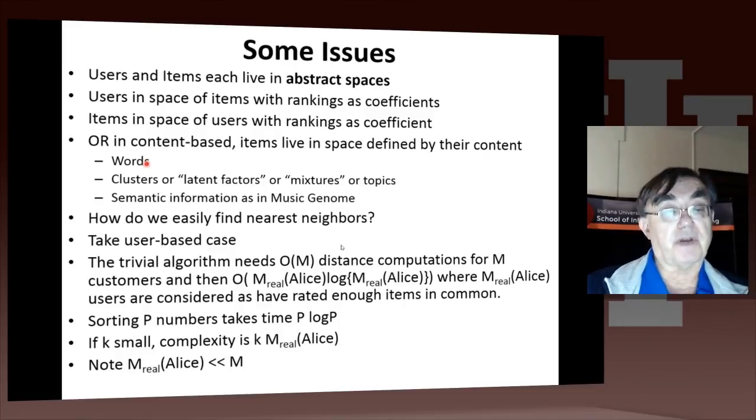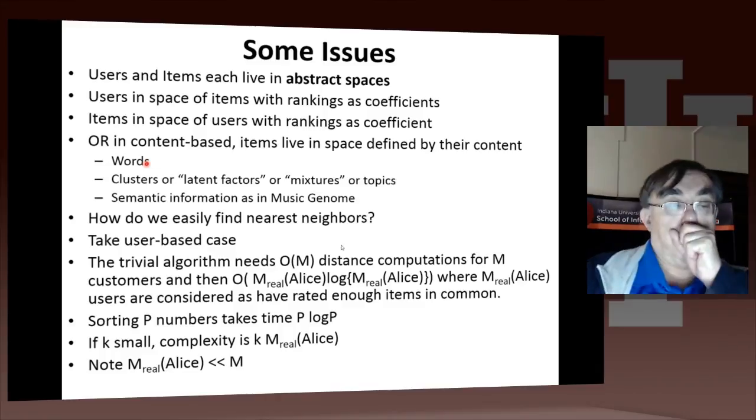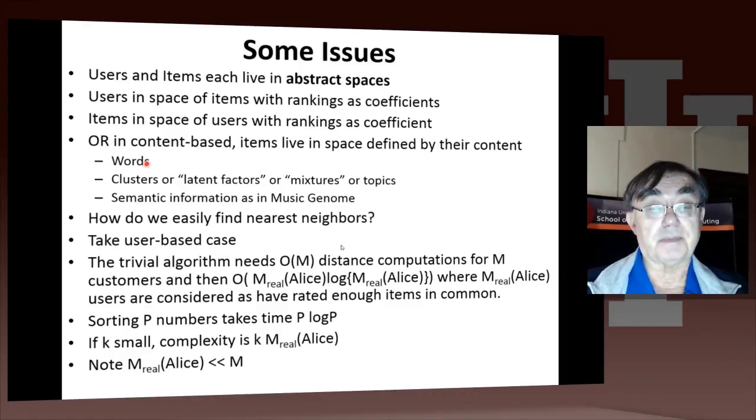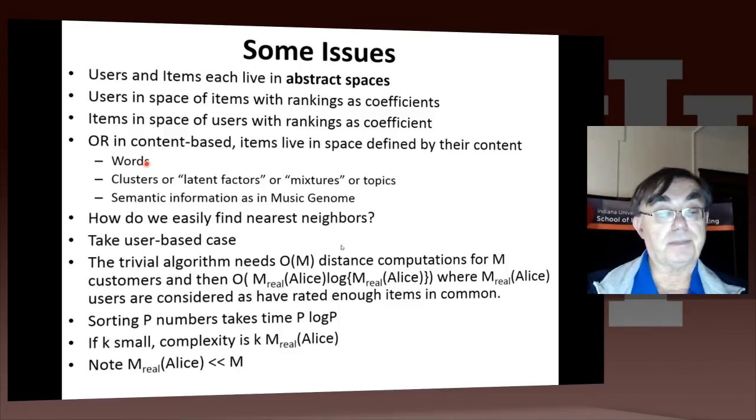Here we have another discussion about what it takes to find nearest neighbors. We'll illustrate it for the user-based case. If we have M customers, we obviously have all the M distances to calculate. Then we want to find, if we're looking at Alice, the users which are rated enough items in common, and we have to sort those distances, and that takes the time order M log M. So if k is very small, you'll find it takes a time like k times the number of customers that are rated enough items in common.